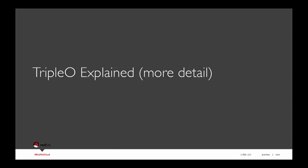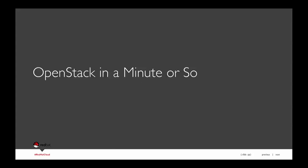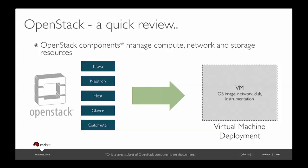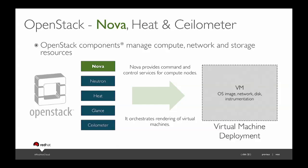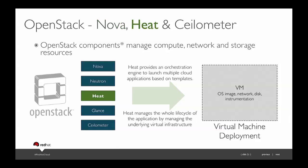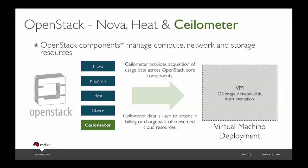Before we go into detail, a 30-second recap of OpenStack. In the traditional OpenStack use case, these services manage virtual infrastructure. Nova provides the command and control services — it orchestrates the rendering of virtual machines. Heat provides application orchestration: you define a Heat template, carve out your resources, hit deploy, and Heat builds your application in a repeatable fashion. And Ceilometer is used to capture usage data for VMs so you can do billing and chargeback for your customers.